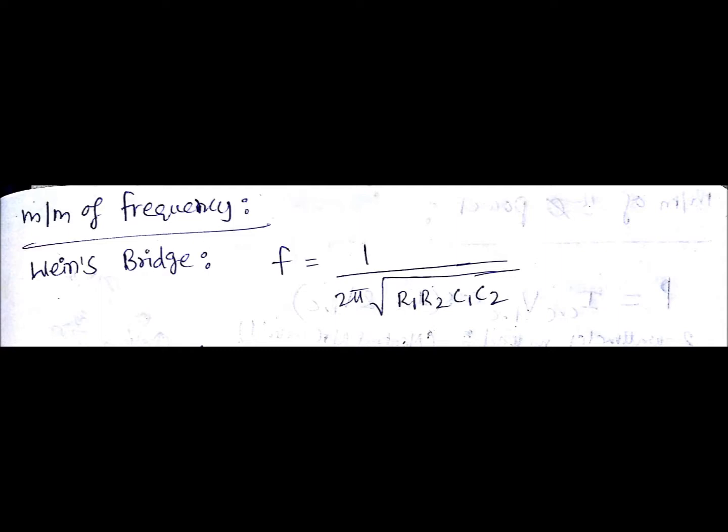The important point in measurement of frequency will be that if you take Wien's bridge, that frequency measured using Wien's bridge will be equals to 1 divided by 2 pi into square root of R1 R2 C1 C2. That is important point in case of measurement of frequency. In the next lecture, we will see measurement of power. Thank you.